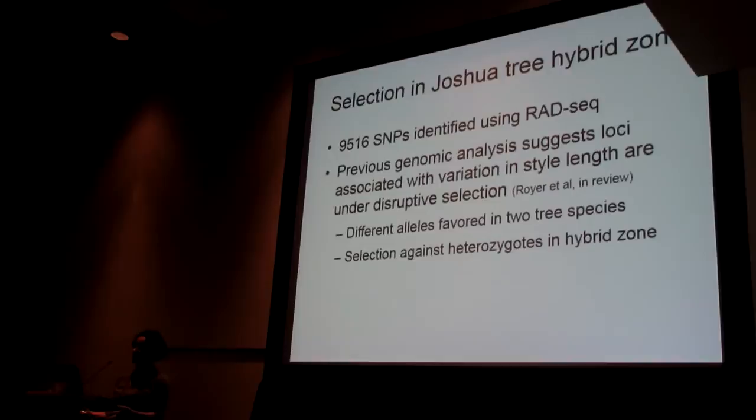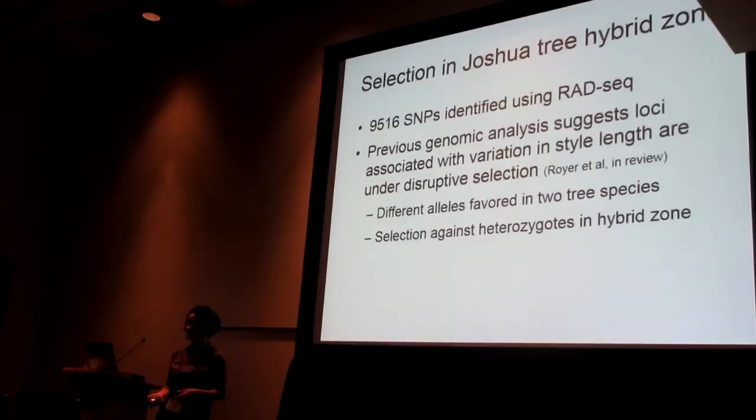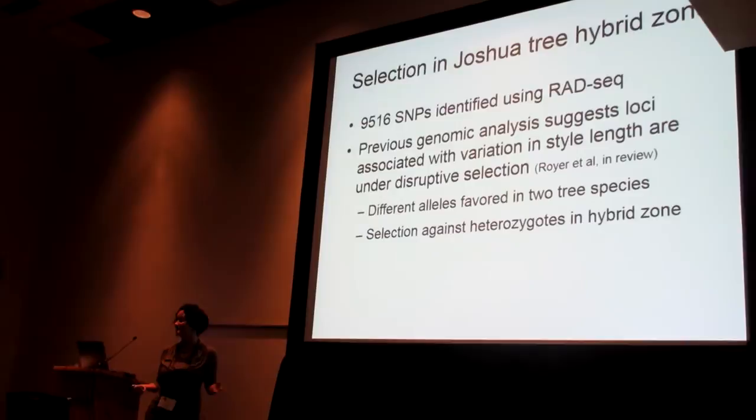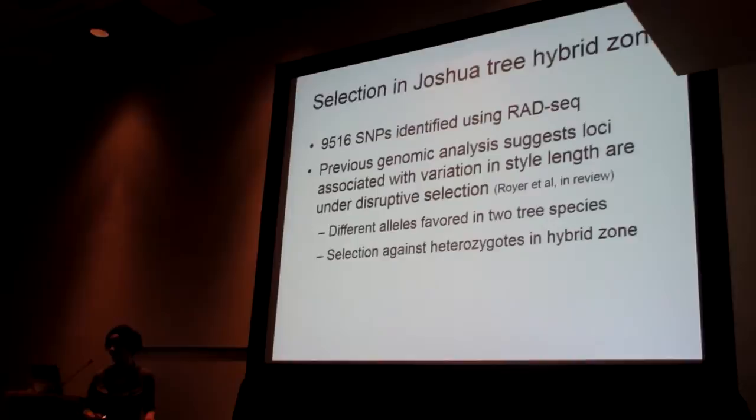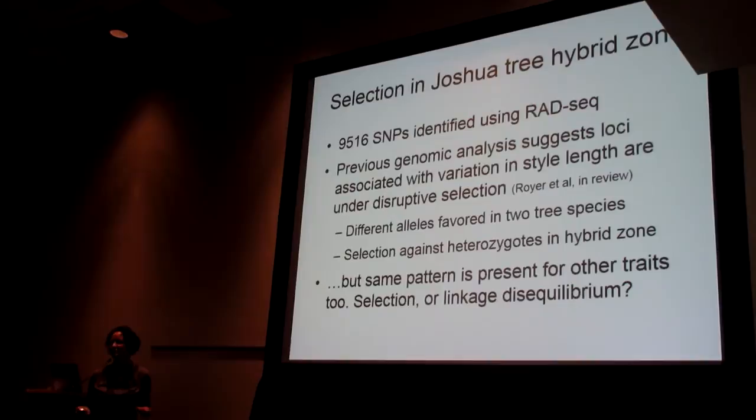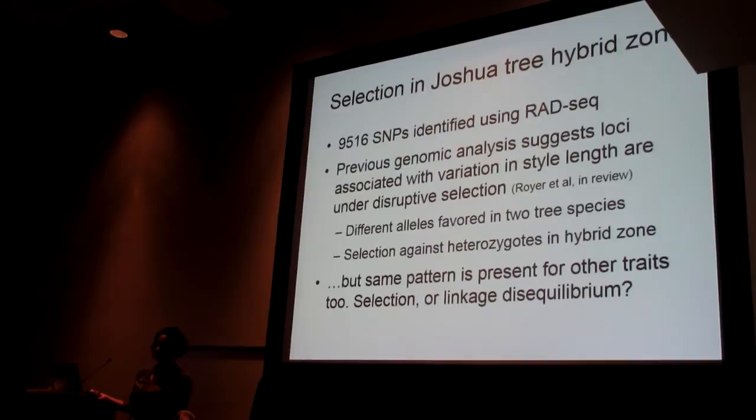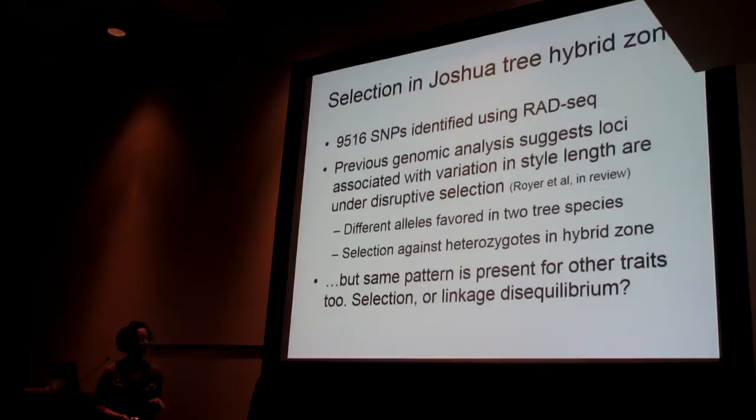In allopatry we find that different alleles are favored in the two species, and in the hybrid zone we find signs of unusual amounts of selection against heterozygotes — so disruptive selection. This sort of sounds like style length is a really important trait for maintaining differentiation. But when you look at other traits that are significantly differentiated between species, you find the same general patterns — not quite as strong, but they're there. So the question is: is this really strong disruptive selection across many traits, or is it linkage equilibrium driving those patterns?